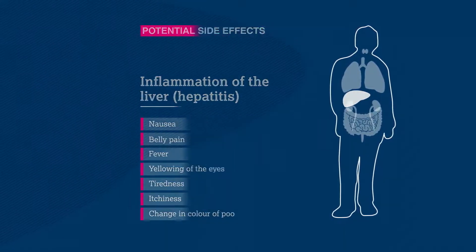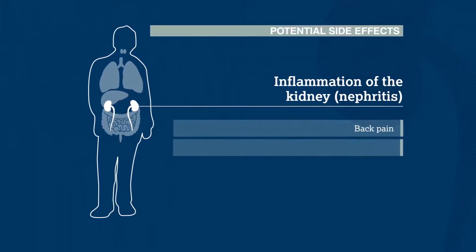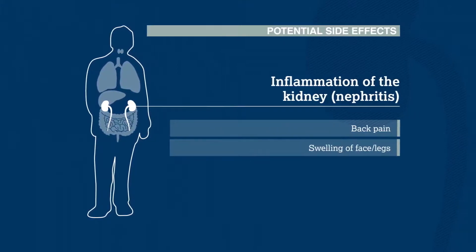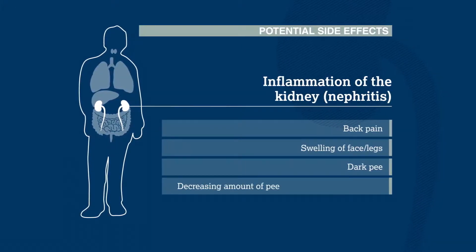If the kidneys are involved, patients may have back pain and swelling of their face or legs. They may also notice that their pee is much darker than usual, or that they're peeing more frequently.